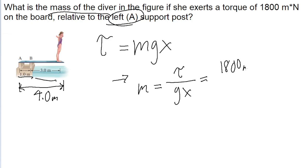that's 1,800 meter newtons of torque divided by 9.8 meters per second squared multiplied by the 4 meter distance. If we put this into a calculator, then we find a mass of the diver of about 46 kilograms.